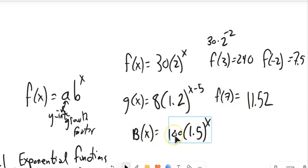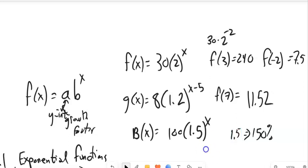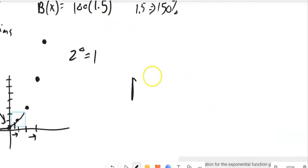Same with things like this. If I have 8 times 1.2 to the power of x minus 5, and I wanted to evaluate f(7), I'm just going to plug in 7 for x. I go 8 times 1.2 to the power of (7 minus 5), so it takes it to that whole parenthesis, and I get 11.52. Notice 7 minus 5 is 2, so I multiplied by 1.2 twice. I started with 8 and increased it by 20% twice.